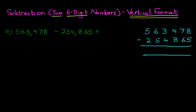We're going to go ahead and do the subtraction starting with the column on the right-hand side first. We've got eight minus five — eight minus five is three. Next we've got the tens: seven minus six — seven minus six is one. Now we're going to do the hundreds: we've got four minus eight.